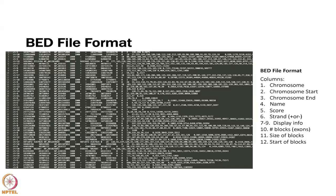One of the things you get from RNA-seq — and you have to specifically request this in your settings — is junction files, which are in BED file format. Annotation databases like RefSeq also use BED files to describe where exons and introns are. These files tell you the structure of the actual genome.